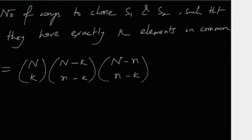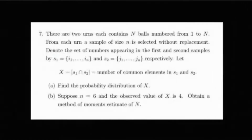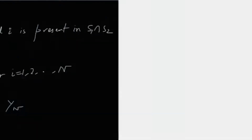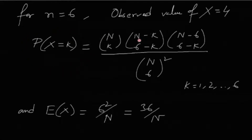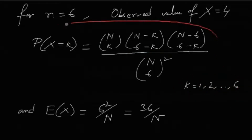For the second question, n is given as 6 and the observed value of X is 4. The distribution of X depends on two parameters, N and n, but since n=6 is fixed, the only unknown parameter is capital N. With n=6, the PMF becomes P(X=k) = [N choose k · (N−k choose 6−k) · (N−6 choose 6−k)] / (N choose 6)², for k running from 0 to 6. The only parameter remaining in the PMF is capital N.